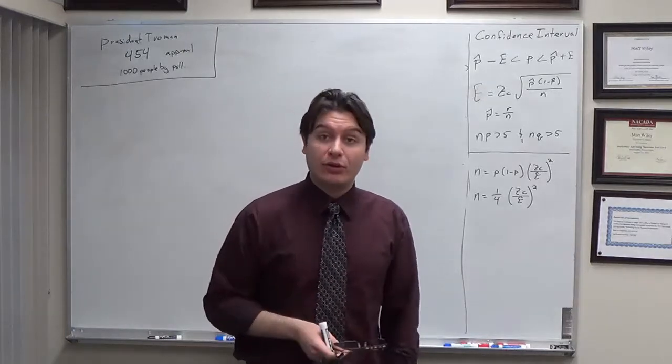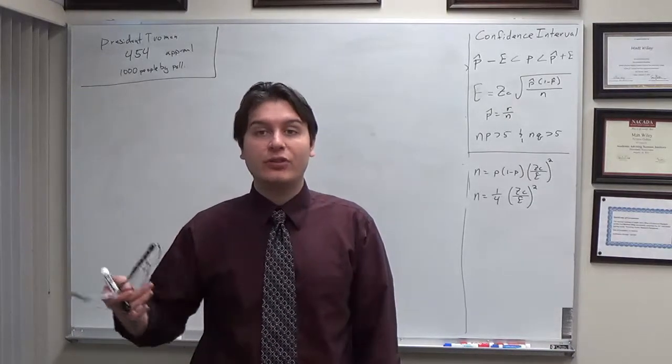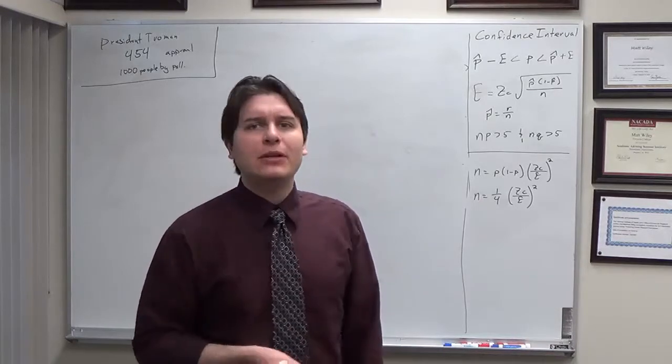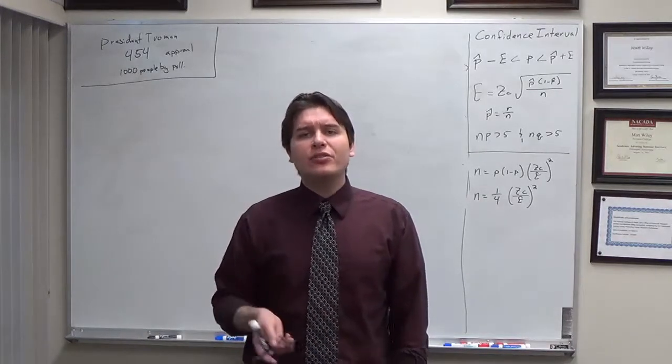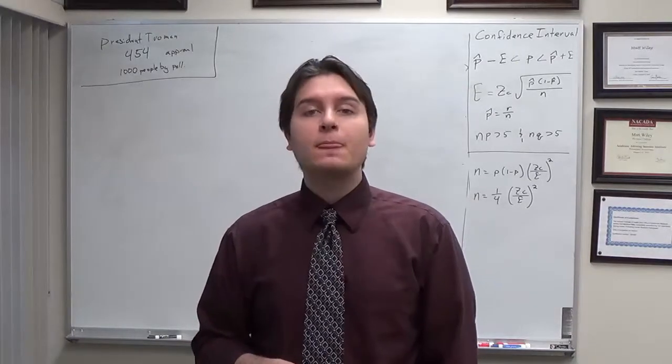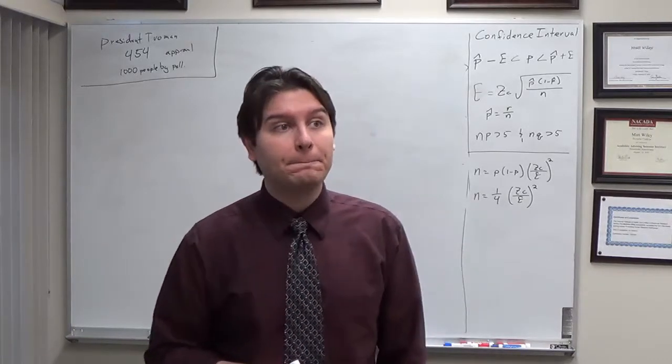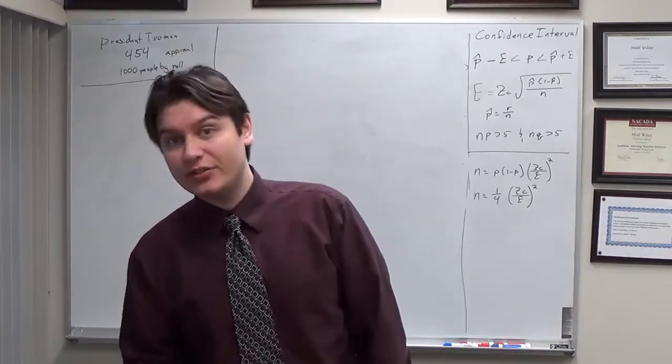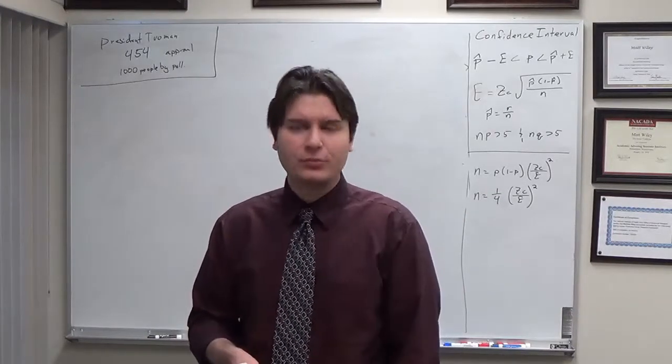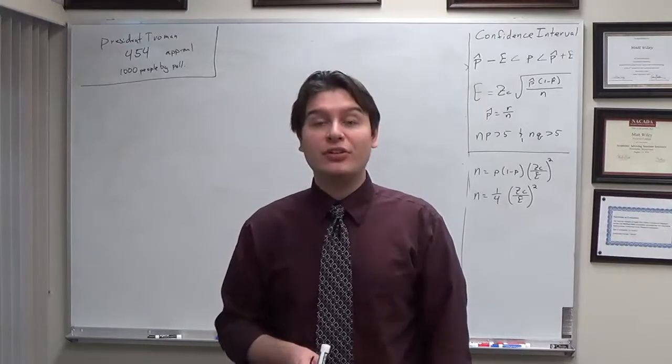Sometimes you don't have information about the population, in which case you can get a standard deviation calculation of the sample rather than the population, and that requires you to use the t-scores, the student t-distribution. The student t-distribution was invented by a statistician named Gossett who worked for Guinness Brewing Company. It was unpopular with Guinness to publish research, so he used the pseudonym 'student of statistics', and so when he created this t-distribution, it was the student's t-distribution.